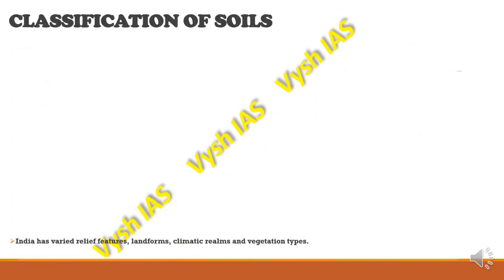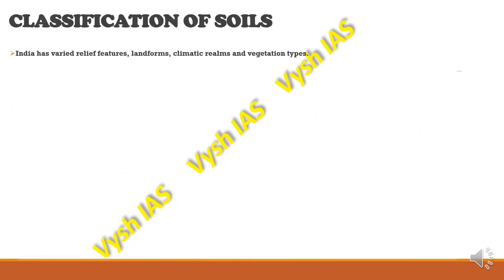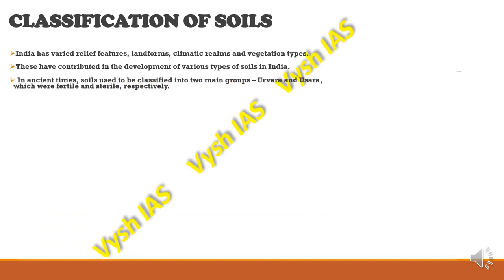India has different types of relief features, landforms, climatic conditions, and vegetation types in different regions, which have contributed to the development of many types of soils. In ancient times, soil was classified into two major groups: Urwara (fertile soil) and Usara (sterile soil).